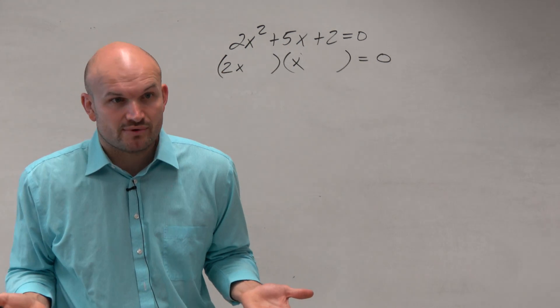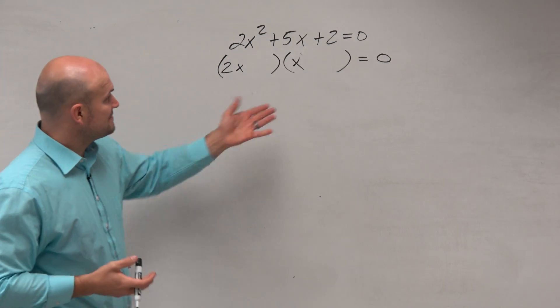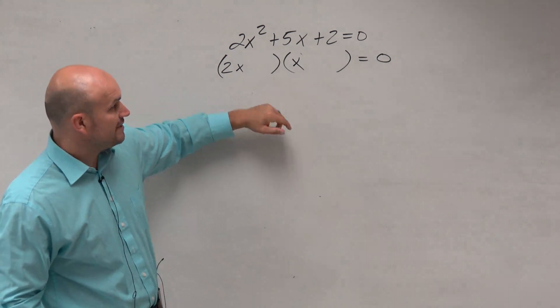Now we need to figure out what two numbers multiply to give me 2. Thankfully, we don't have many options here. We have 2 and 1, and negative 2 and negative 1. Obviously, since our middle term is going to be positive, that means our two factors need to be positive.